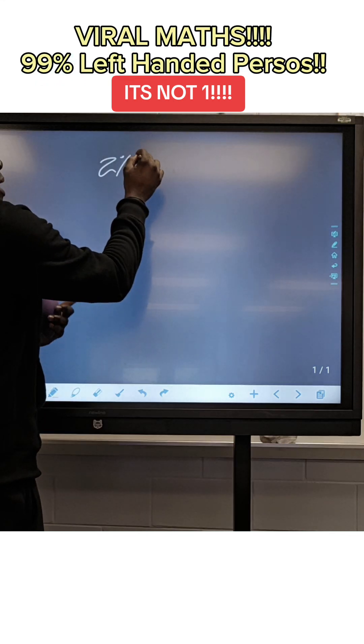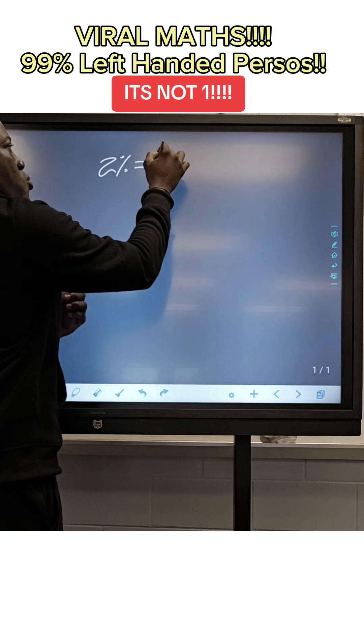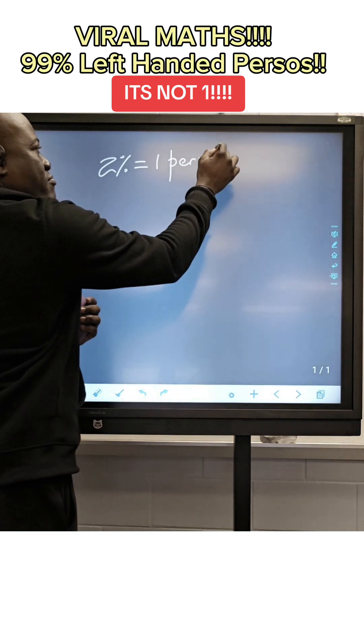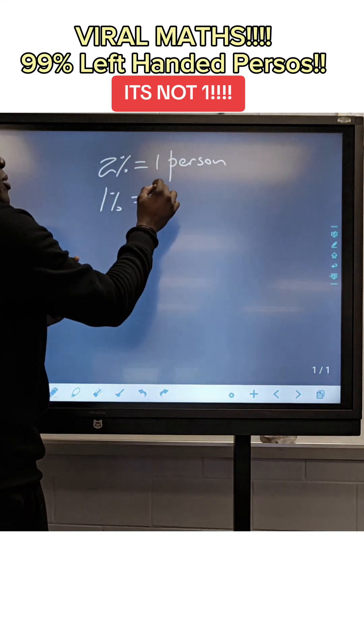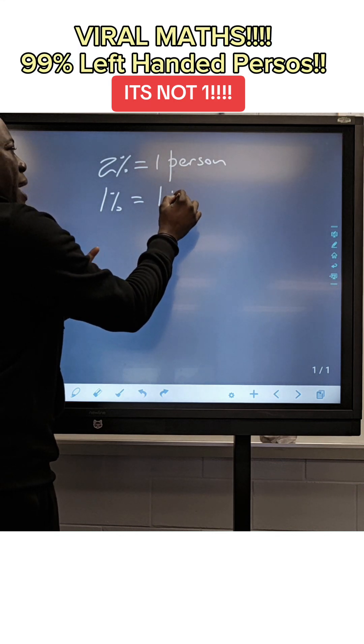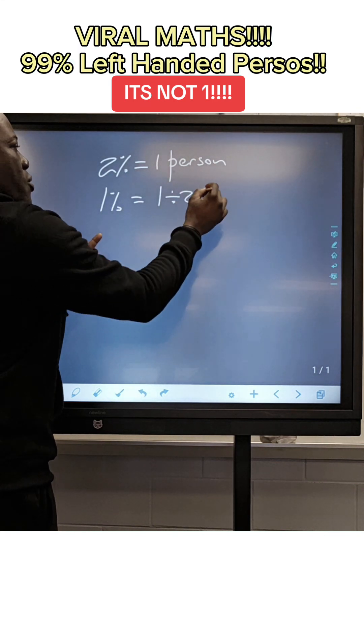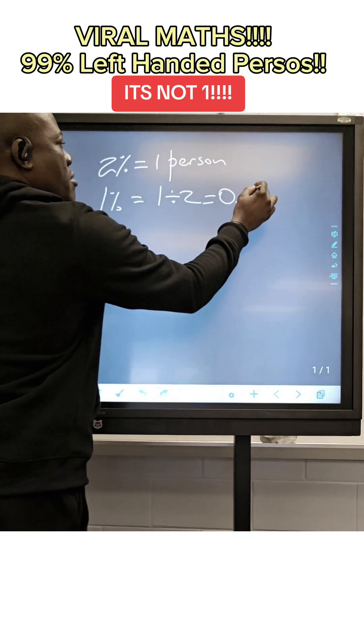1% is right-handed. But we only have 1 right-handed person. So what is 1%? 1% would have meant that I'm going to divide 1 by 2. So 1% is 0.5.